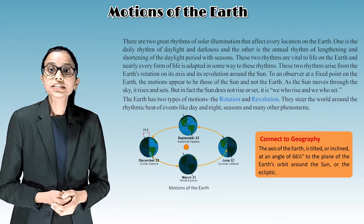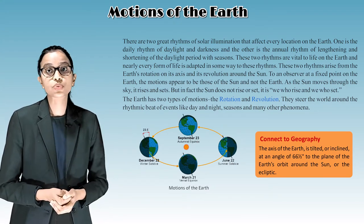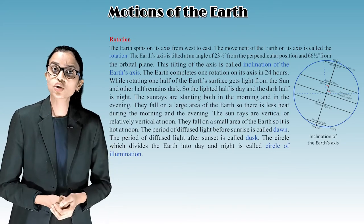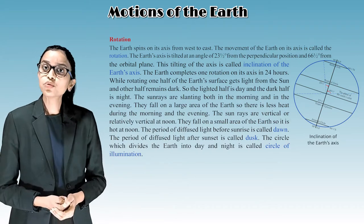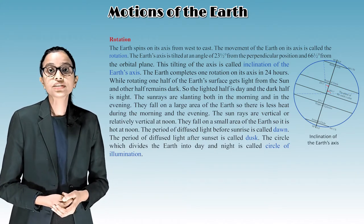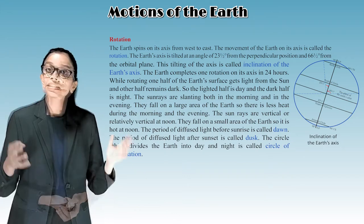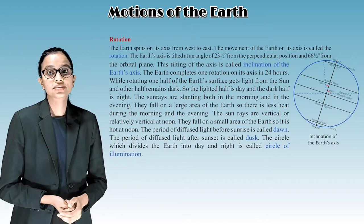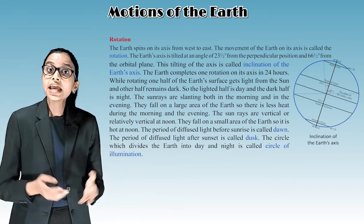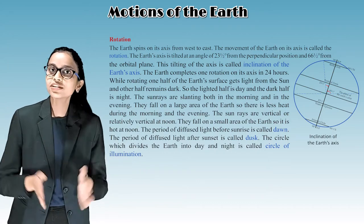The axis of the earth is tilted or inclined at an angle of 66 and a half degrees to the plane of the earth's orbit around the sun, or the ecliptic. The earth spins on its axis from west to east. The earth's axis is tilted at an angle of 23 and a half degrees from the perpendicular position and 66 and a half degrees from the orbit plane. This tilting of the axis is called inclination of the earth's axis. The earth completes one rotation on its axis in 24 hours, which equals one day.